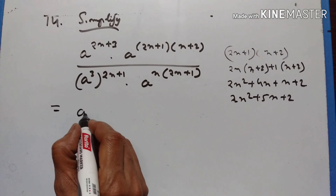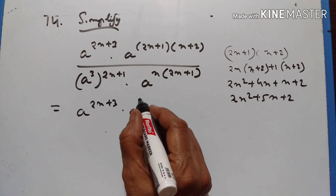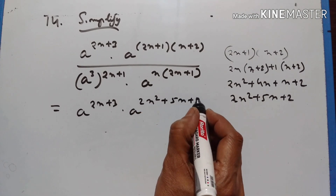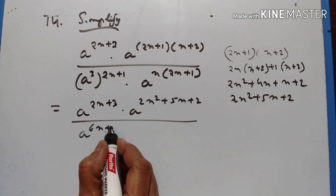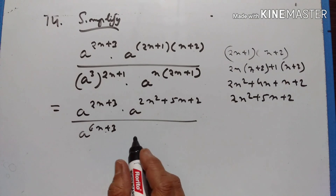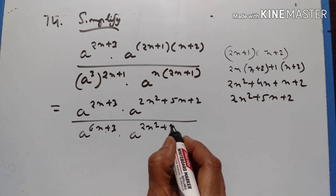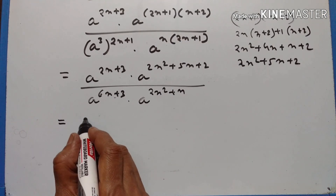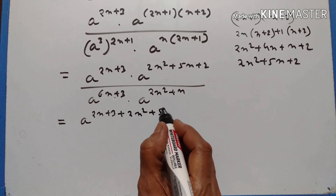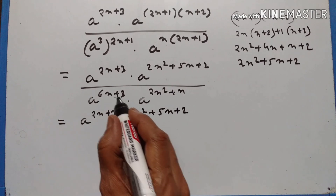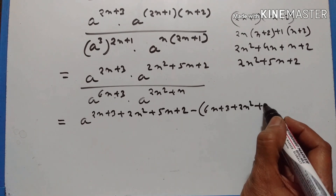This is equal to a to the power of 2n plus 3, into a to the power of 2n squared plus 5n plus 2, upon a to the power of 6n plus 3 — that is 3 into 2n plus 1 — times a to the power of n into 2n plus 1, which is 2n squared plus n. So the full exponent is 2n plus 3 plus 2n squared plus 5n plus 2, minus 6n plus 3, plus 2n squared plus n.